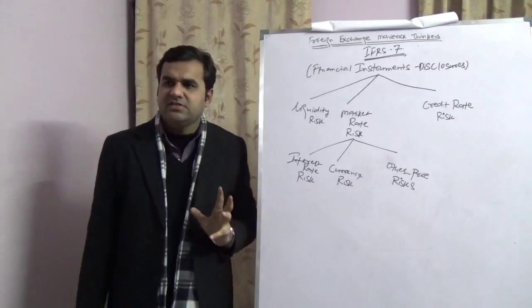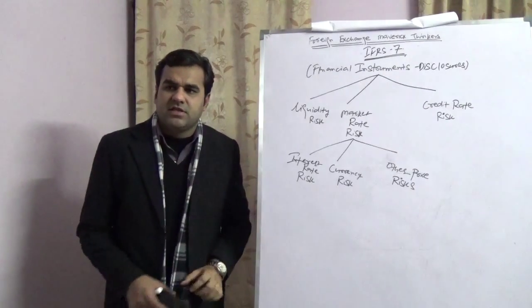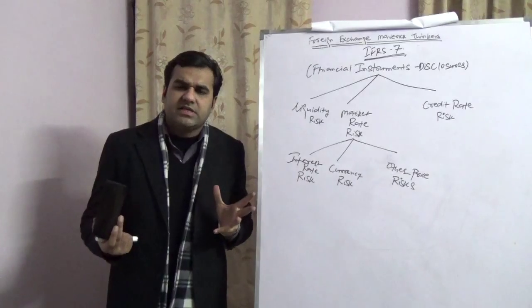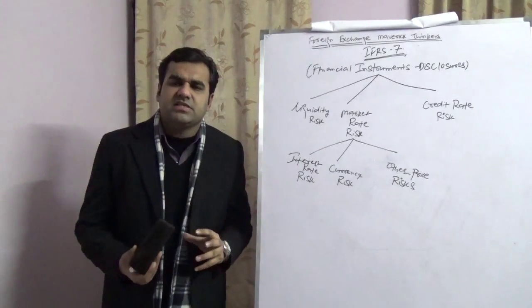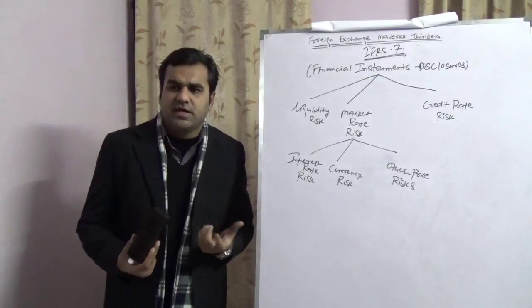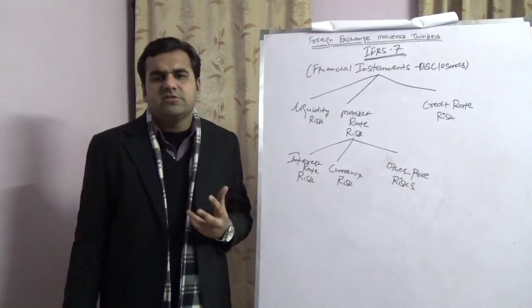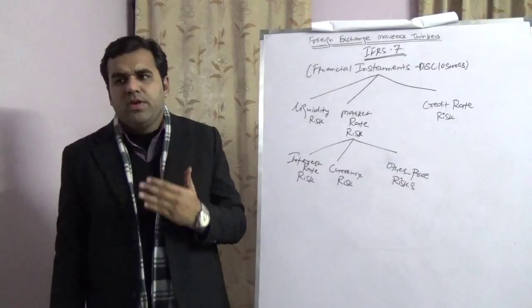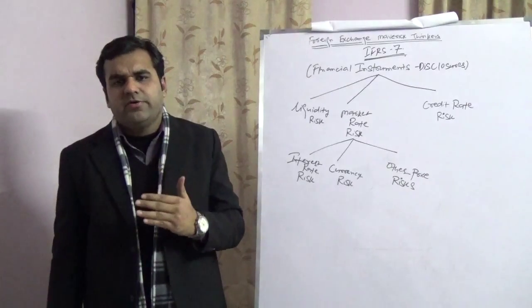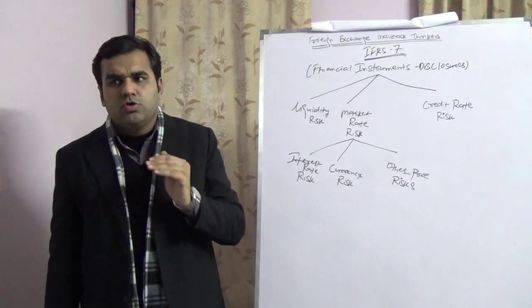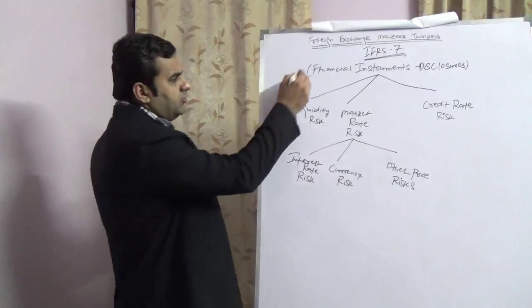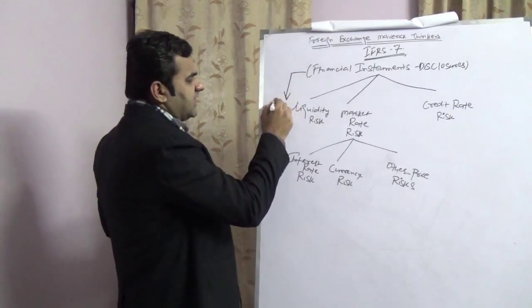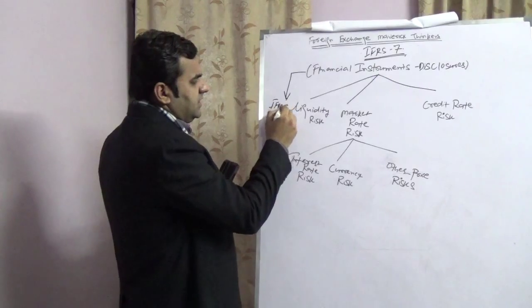IFRS 7 says, take an example of liquidity risk. You are holding a certain amount of foreign exchange liabilities, local currency liabilities, or maybe a mix of that. Now, liquidity risk refers to a fact that you may or might not find a good amount of liquidity in the system to price that.